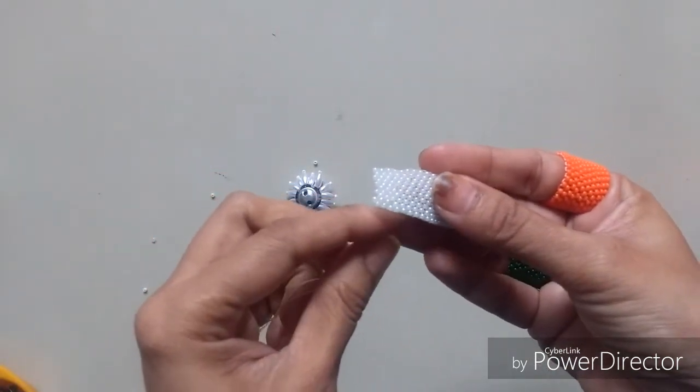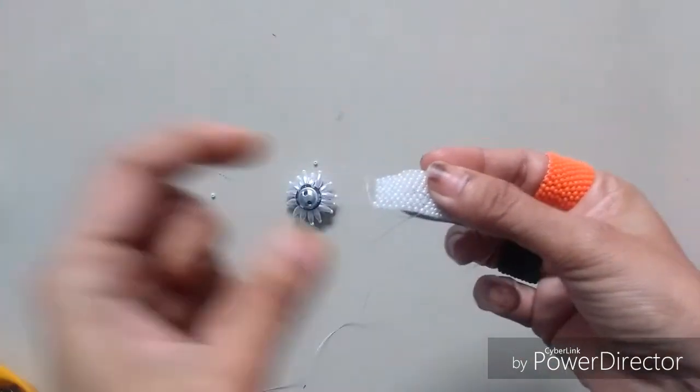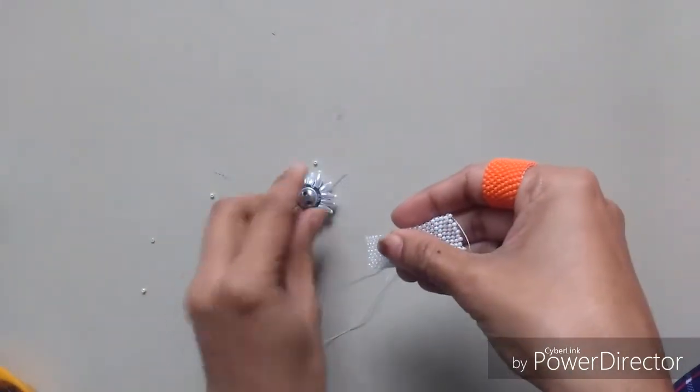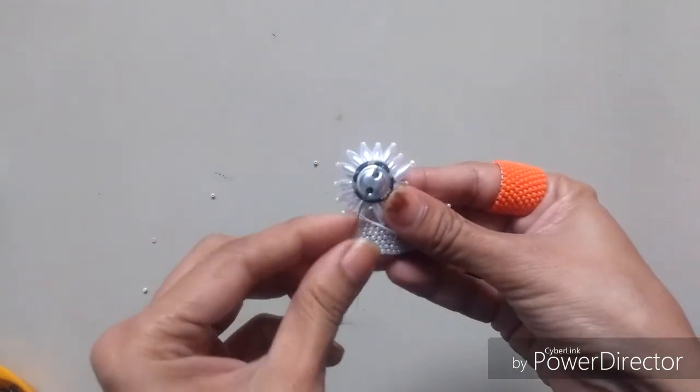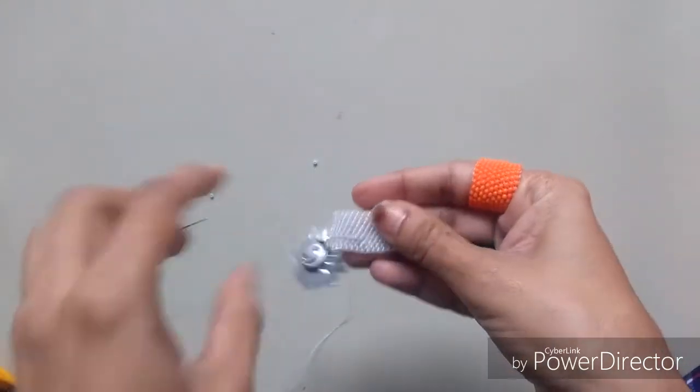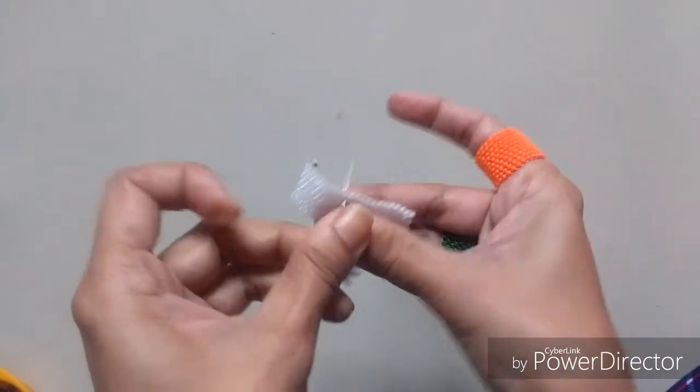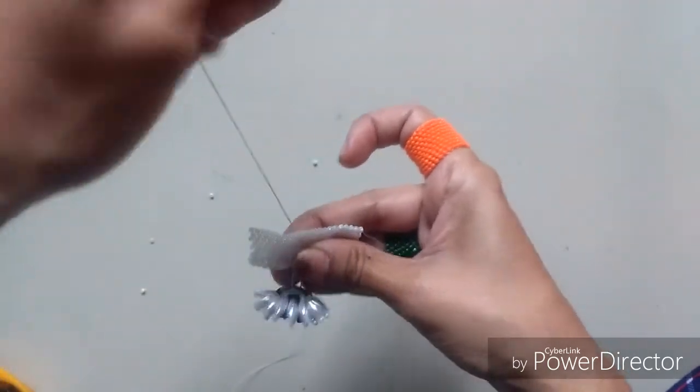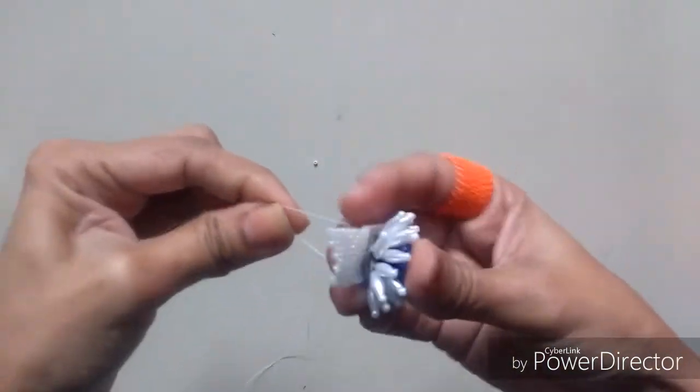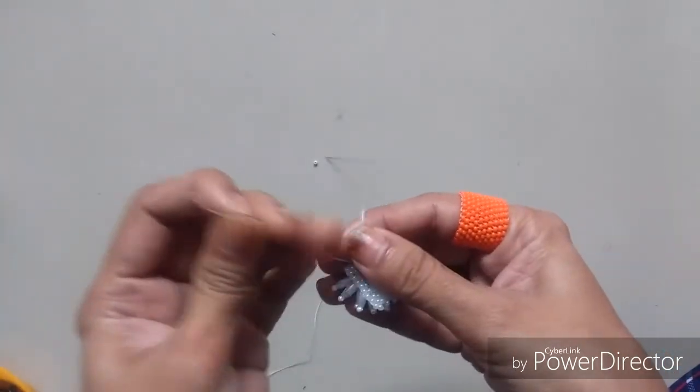Just come out of any of the bead with another needle. Just pass the needle through the holes and just go to other side. Pull it properly. Now on this side make a knot.